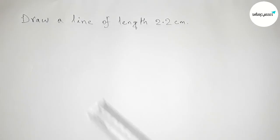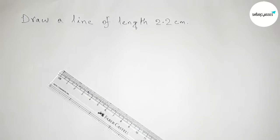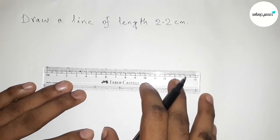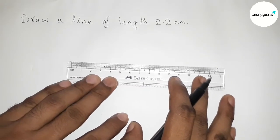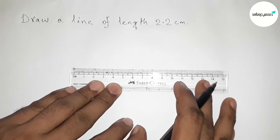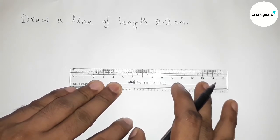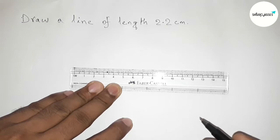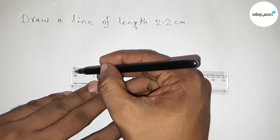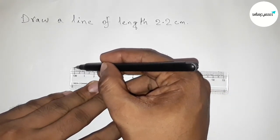First of all, I'm going to use a scale and first we have to measure the length 2.2 centimeters by using the scale. So first putting the scale, first by this way. Next we have to start counting.